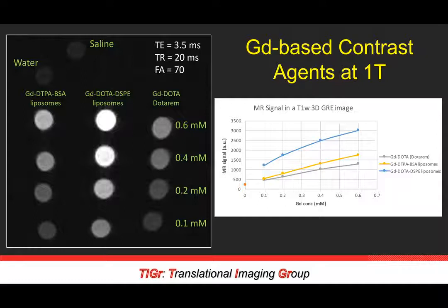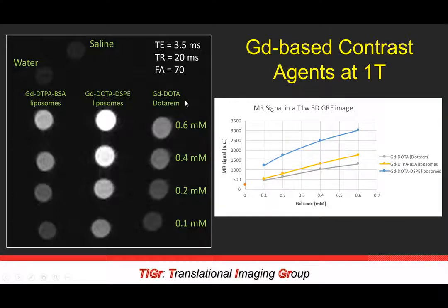Why are we using this gadolinium agent at one Tesla, and specifically why are we using a permanent magnet? Shown here on the left are phantoms with varying concentrations of gadolinium, including two of our liposomal preparations and base doterim. As concentration increases, we have signal increase, which you would expect for contrast-enhanced MRI. You can see on the right that our DSP liposome formulation has the highest signal intensity of the three preparations shown.